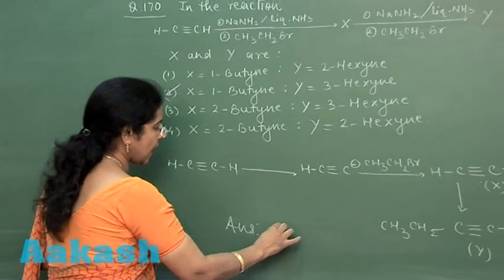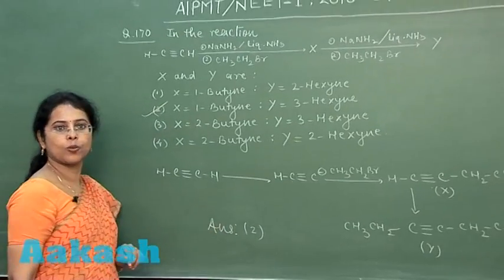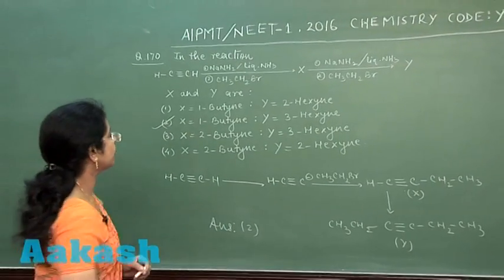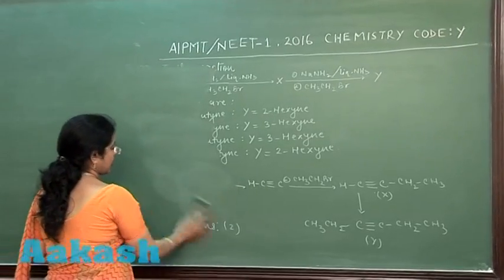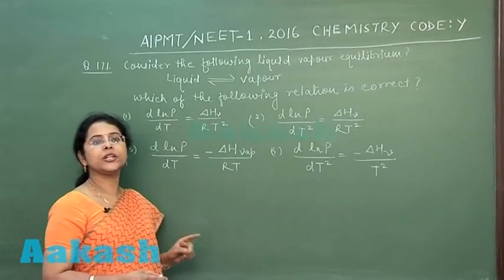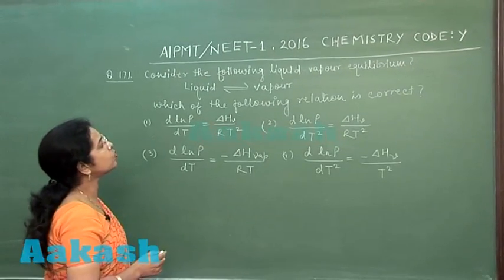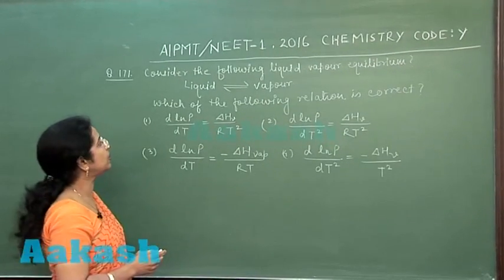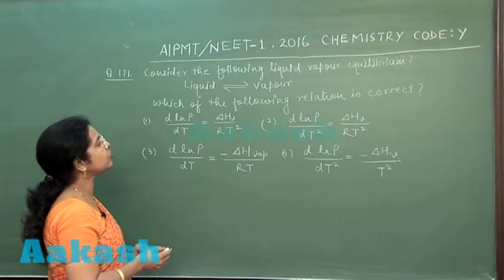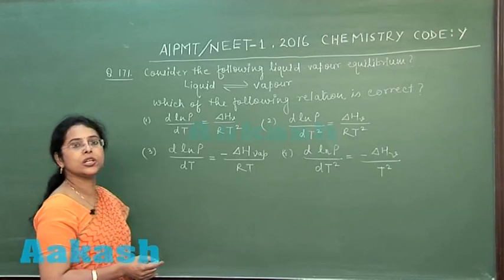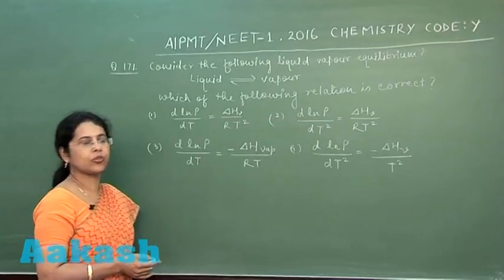Moving to the next question, which is question number 171. Consider the following liquid-vapour equilibrium: liquid in equilibrium with vapour. Which of the following relation is correct? Four relationships are given.